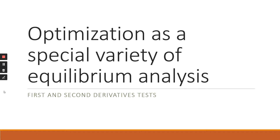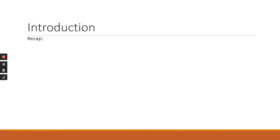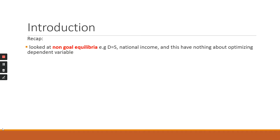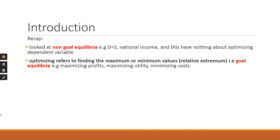In this video we're going to look at how we use first and second derivatives to solve optimization problems. With previous topics, the focus has mainly been on solving equilibrium solutions — non-goal equilibrium problems — where, for instance in the market model, we solved for equilibrium quantity demanded or supplied without setting a specific optimization condition. Going forward, optimization problems are about finding values that maximize or minimize a specific goal, such as profit maximization or cost minimization. We call these relative extremums.